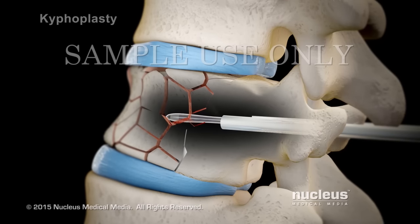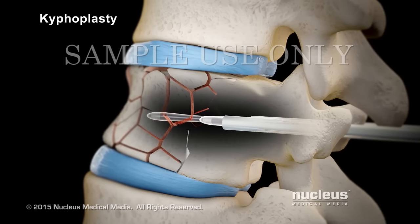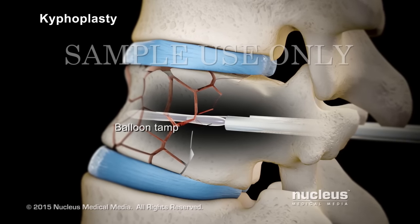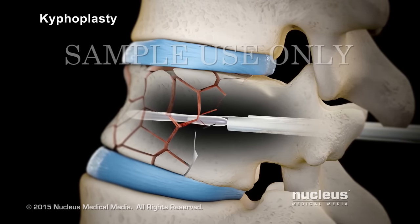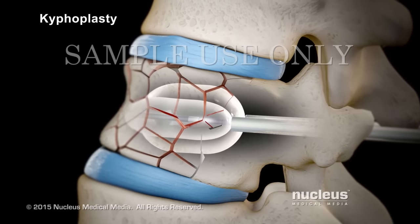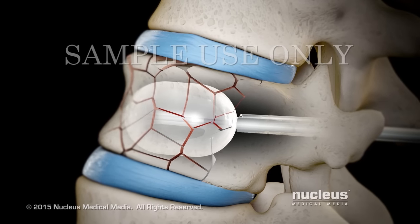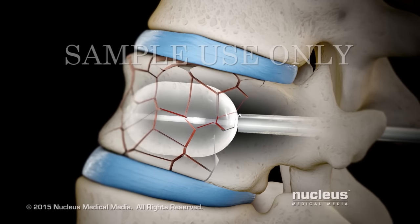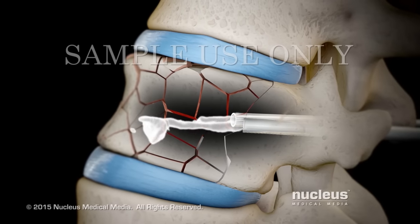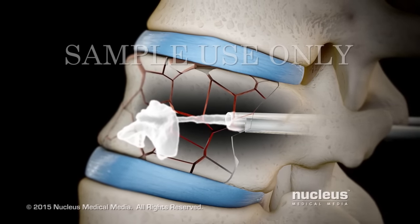If you are having a kyphoplasty procedure, your doctor will first insert a balloon tamp through each cannula before injecting the cement. The balloon on the tip of this device will be inflated to restore the height of your vertebral body. After deflating and removing the balloon tamp, your doctor will fill the space created by the balloon with bone cement.